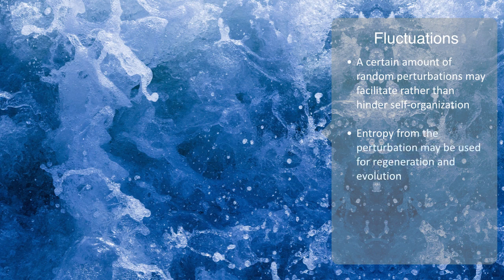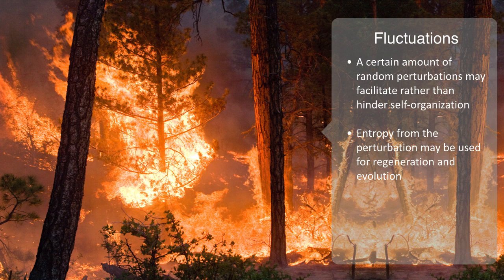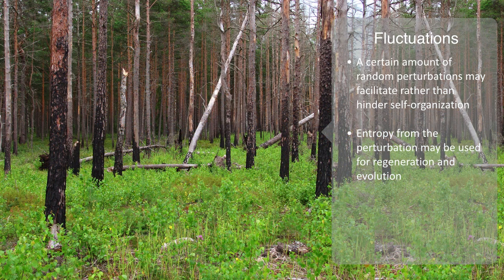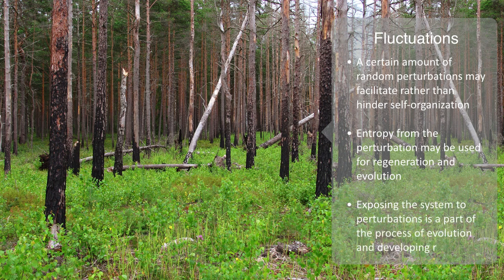For example, forest fires are thought to play an important role in the development of ecosystems. Excluding fires from these ecosystems means fire-adapted plants decline in abundance and overstocked forests become prone to catastrophic fire due to the buildup of woody fuels. Exposing the system to perturbations without destroying it is a core part of the process of evolution and developing resilience.